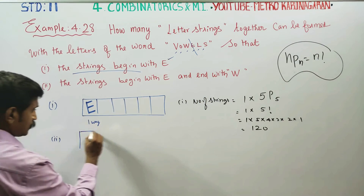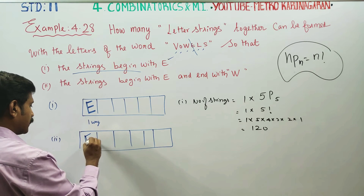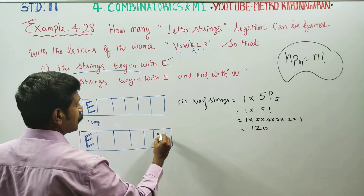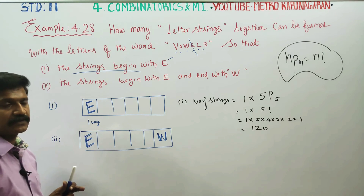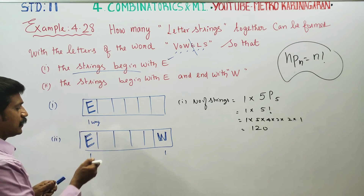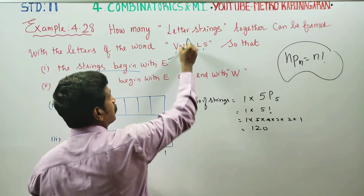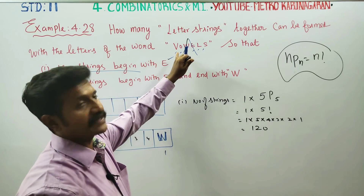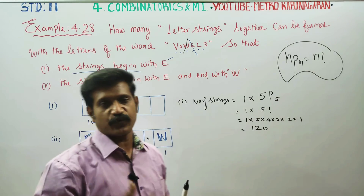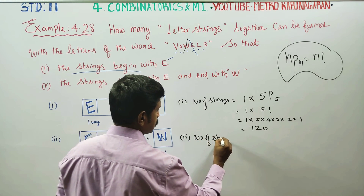Second condition: the strings begin with E and end with W. There are 6 places. The first place is totally dedicated for E, and the last place is totally dedicated for W — both are fixed. That leaves four vacancies in the middle positions.